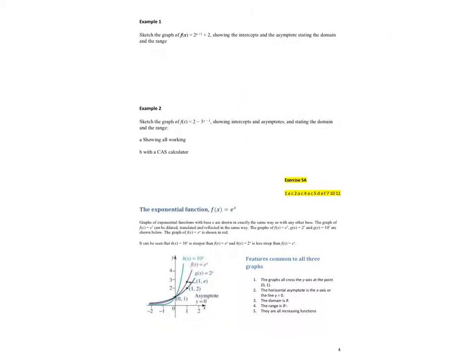So if we want to do some basic graph sketching, it's just using the same properties we've always used. For 2^(x+1) + 2, the x+1 shifts the graph left one unit, and the +2 moves it up two units. First, let's put an asymptote in place. Instead of being at y = 0, it's going to be at y = 2.